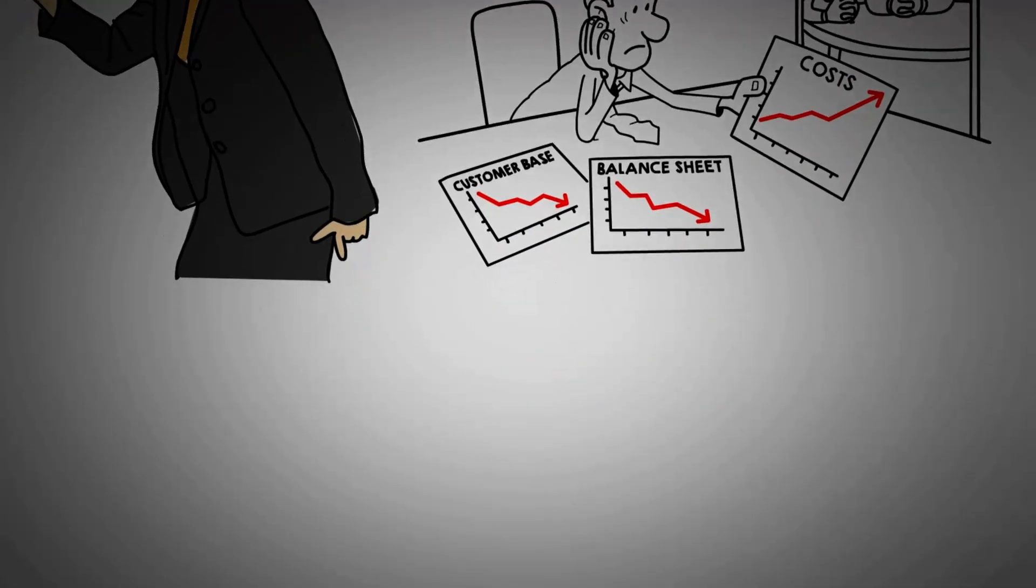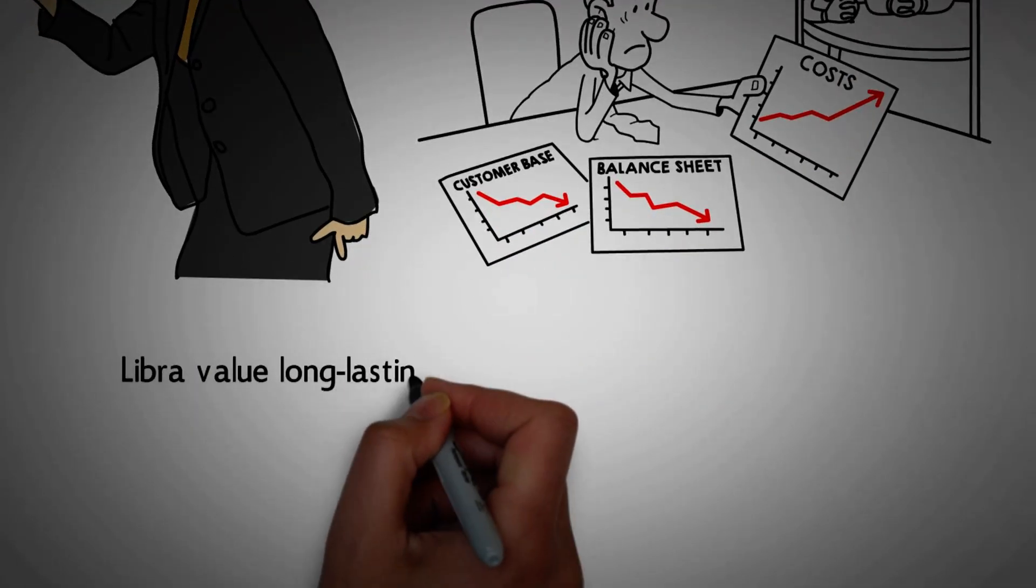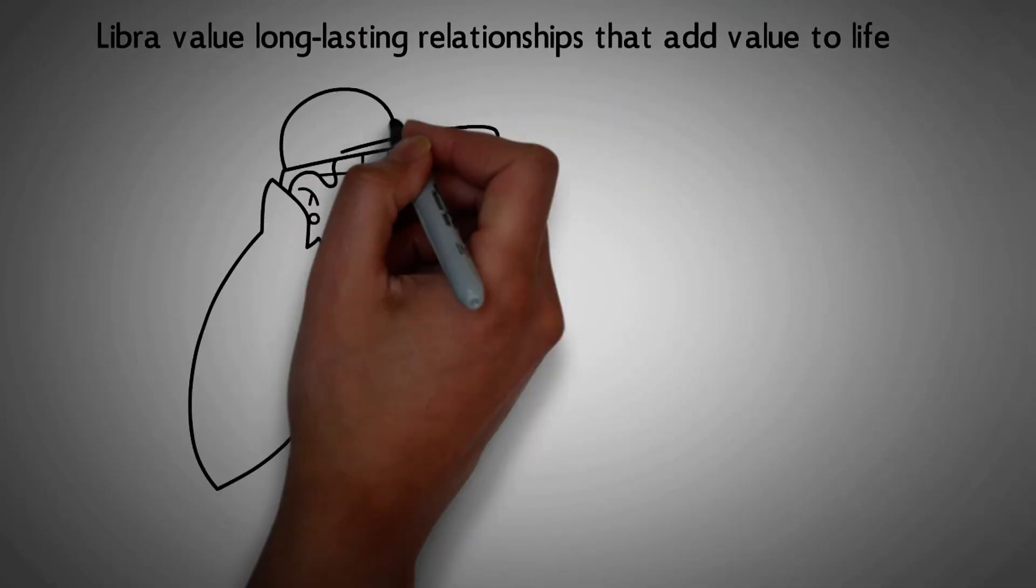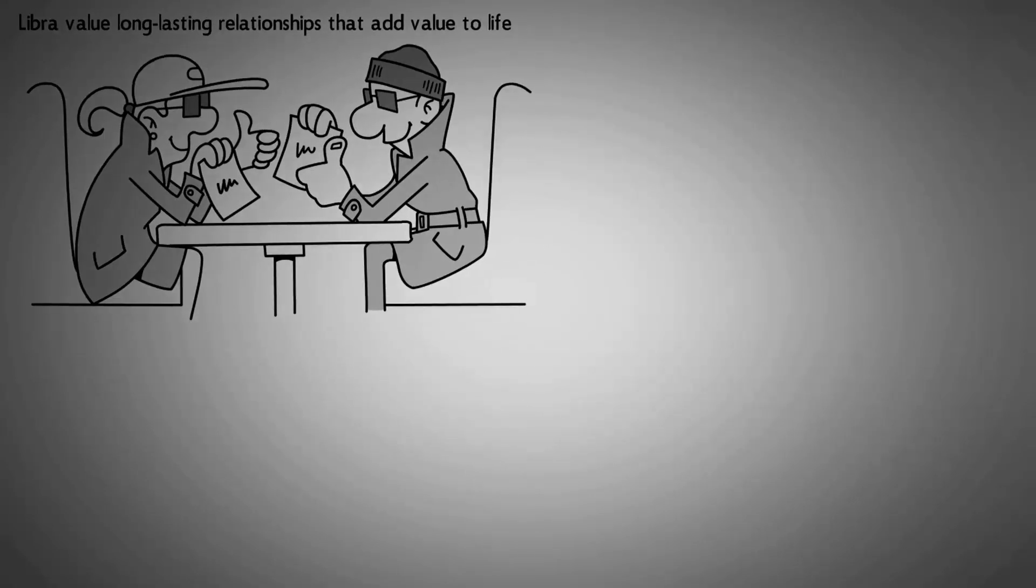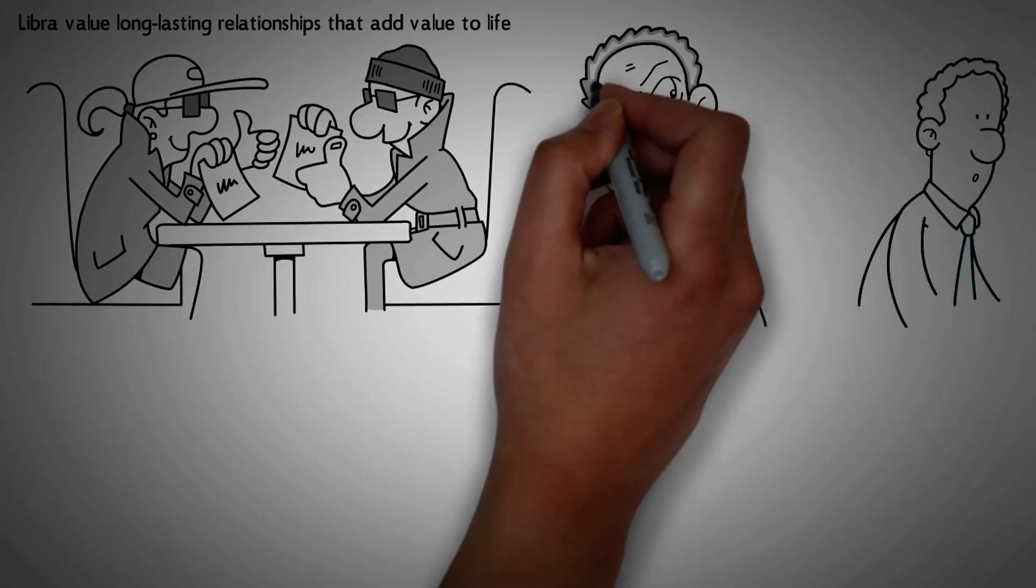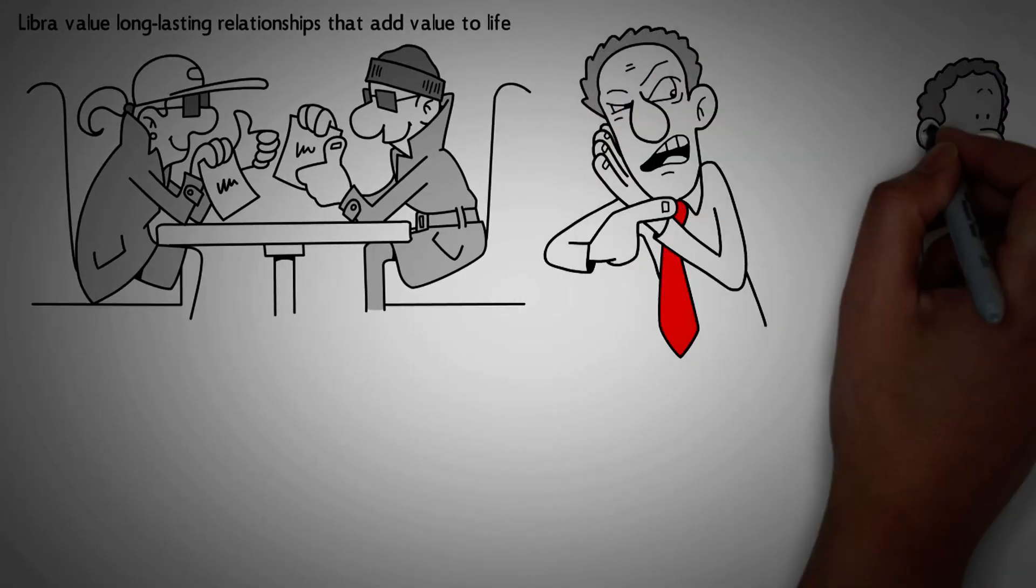Number 2. Libra value long-lasting relationships that add value to life. The desire of Libra to settle for a long-term relationship prevents them from committing quickly. Libra avoids meaningless relationships and prefer waiting rather than settling with the wrong person.